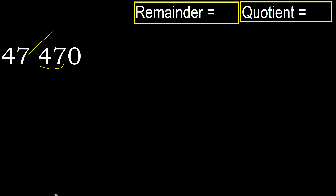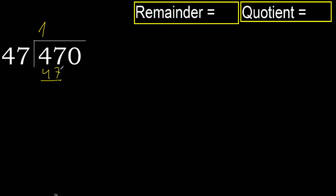47 multiplied by 2 is greater. Multiplied by 1 — 47 is not greater. So 47 minus 47 equals 0. Next.